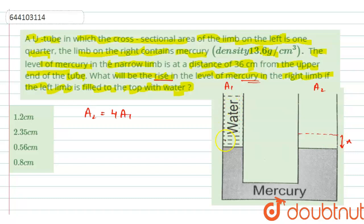Now when we are placing the water, if there is rising in the level of mercury, then there will be some drop in the level of mercury in the left limb. And this drop will not be same because the area of cross-section of both the limbs are different.